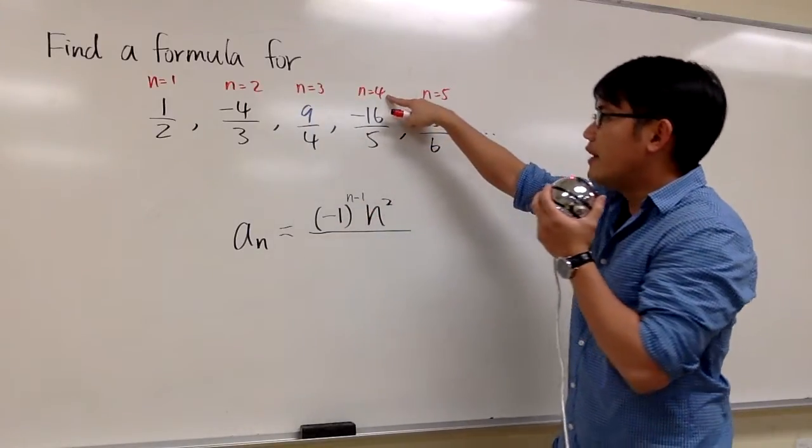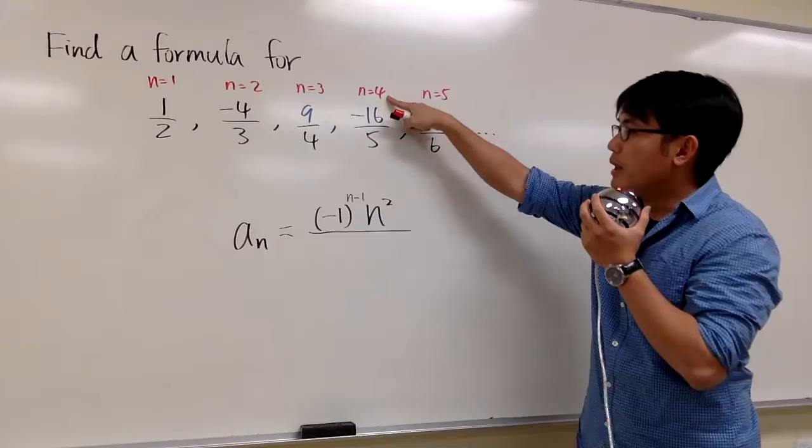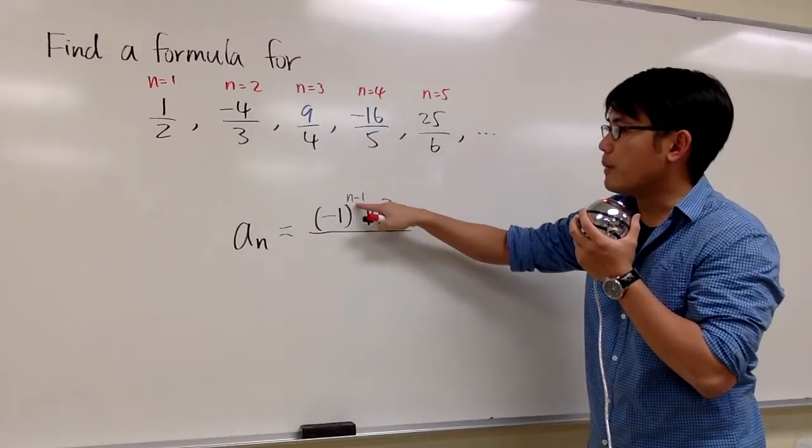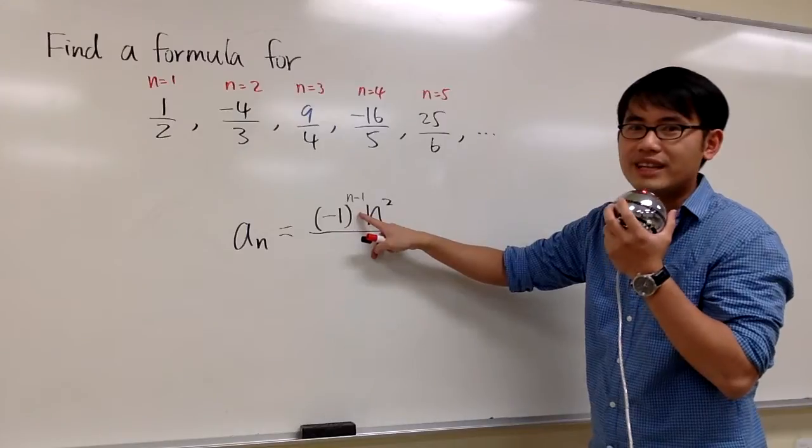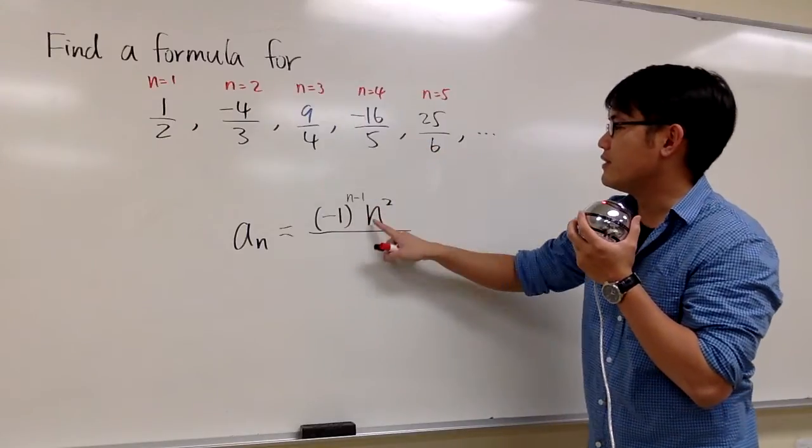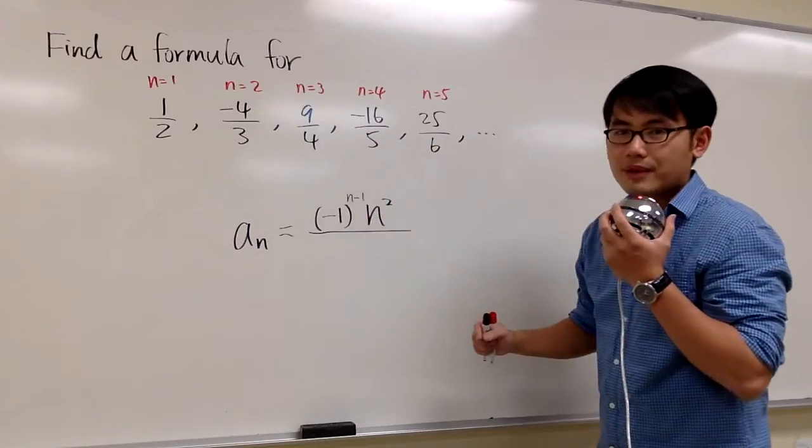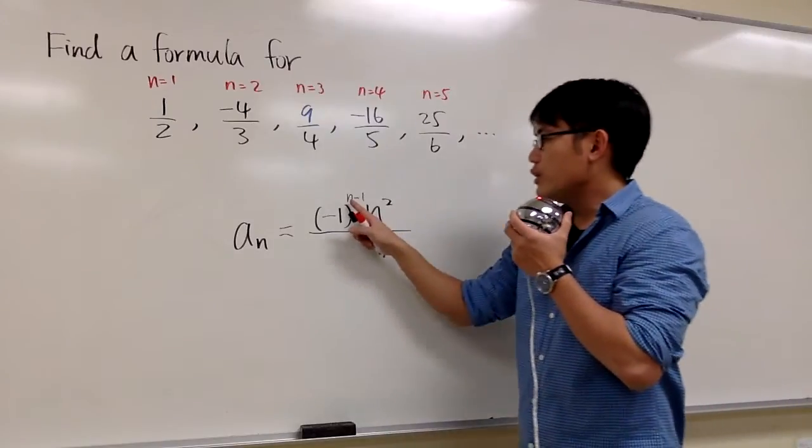Let's do a quick check. For example, if n equals 4, plugging 4 into this n, we get 4 minus 1, which is 3. Negative 1 raised to the third power gives a negative value. That's how we get negative, and then 4², which is 16.